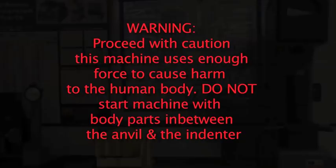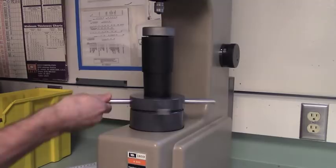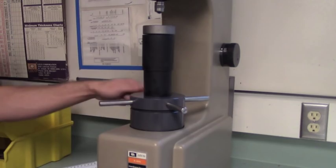Rotate the anvil adjustment clockwise in order to raise the anvil. You can also turn the anvil adjustment counterclockwise to lower the adjustment. Raise the anvil so that it is approximately 1.5 inches from the indenter height.